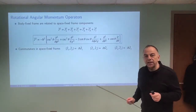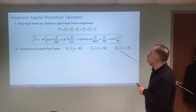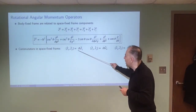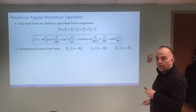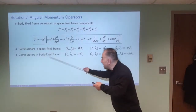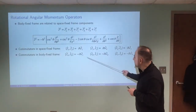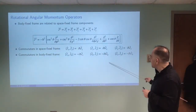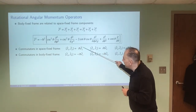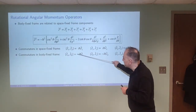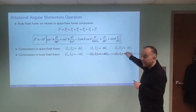There are some very interesting commutator relationships for the rigid body. As you might expect, the components of the space-fixed frame do not commute, so J_X and J_Y don't commute and give a non-zero value of iℏJ_Z, and similarly for the other components. Similarly, in the body-fixed frame, the components of the angular momentum do not commute either. J_A and J_B do not commute and give you −iℏJ_C, so there's a sign difference compared to the space-fixed frame. So the components do not commute in either the space-fixed or body-fixed frame.